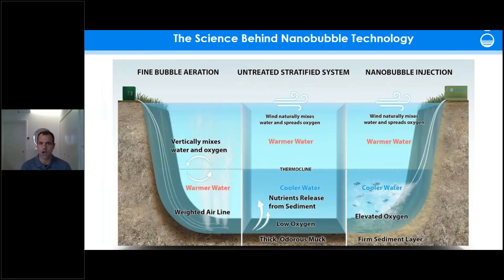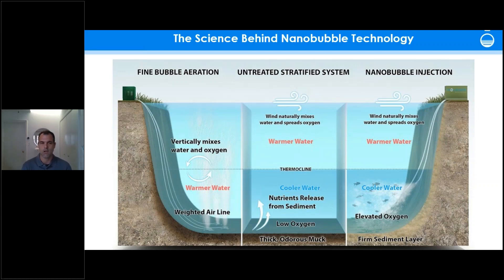Our technology is a shore-mounted system that acts like a kidney — water is pumped through, nanobubbles are formed as air is injected, and then the water is reintroduced back into the pond or lake. Most commonly, we bring the bubbles to the bottom near the sediment to increase dissolved oxygen levels there, helping beneficial bacteria become aerobic and start consuming nutrients to outcompete the algae for its food source.